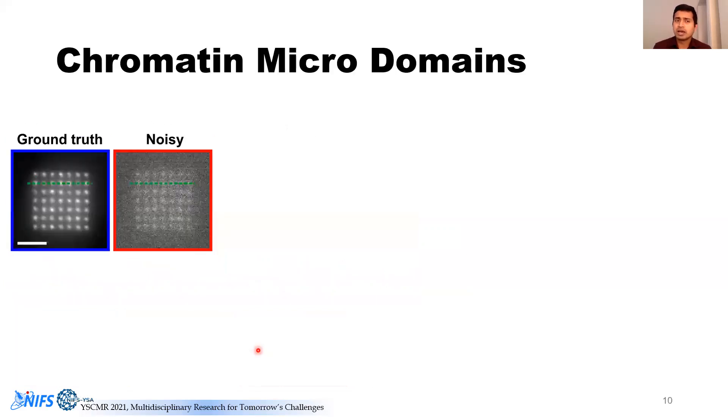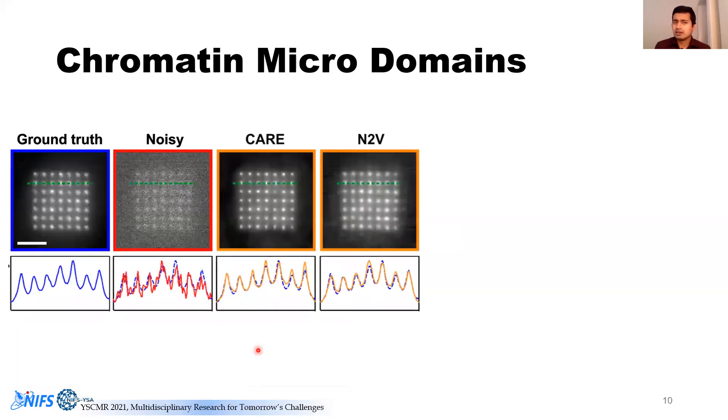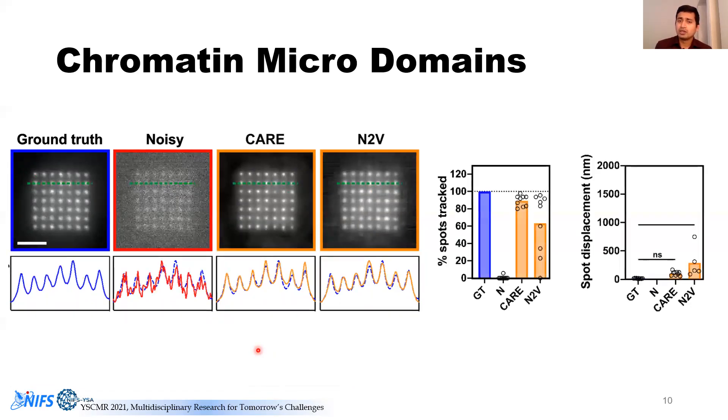When you look at the microdomain data, supervised and unsupervised did a good job. When you look at the recovery of it, we can see here that CARE has done much better compared to that of N2V. Even in this, CARE has outperformed N2V.